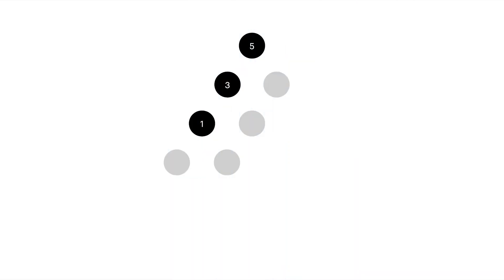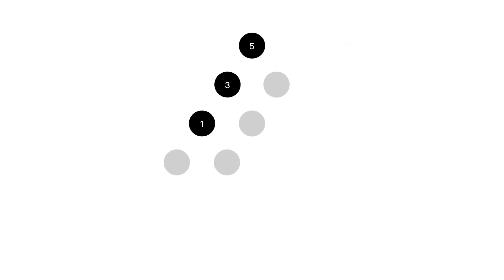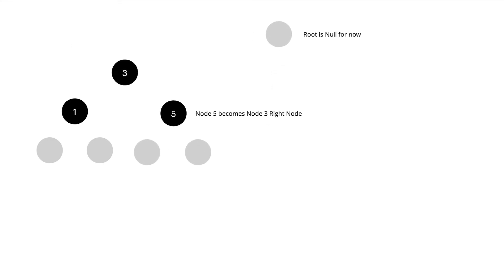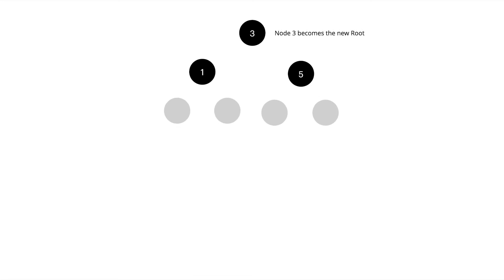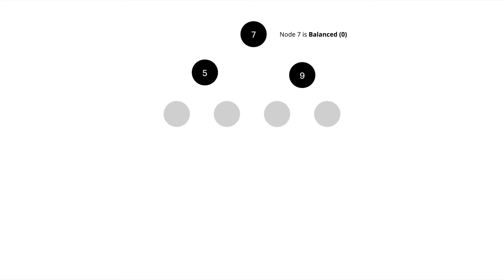What we will be doing is called rotations, and there are different types depending on the balance factor of the node. For a left-heavy tree, we rotate the root node to the right of its left node — the left node becomes the new root and the root becomes the right node. This is why we reassign root on insert. We do this by detaching the left node, moving its right node to become the root's new left node, then making the root the detached left node's right node, and setting the detached left node as the new root. We may have a similar situation on the right side, where we do a left rotation, placing the current node on the left side of the right node, therefore balancing the tree again.